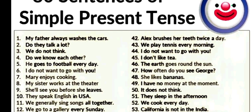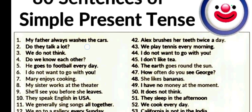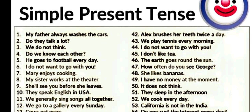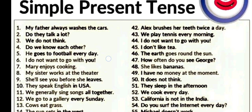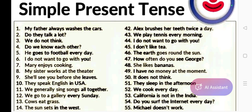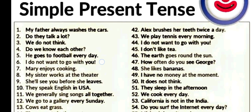He goes to football every day. You can see here — if a singular noun is there, the verb has 'es' attached to it. The same way, if 'he,' 'she,' or 'it' is the subject, 's' or 'es' is attached to the main verb. But if we used 'we' instead, the sentence would be 'We go to football every day' — no 's' or 'es' attached if the subject is I, we, you, they, or a plural noun.